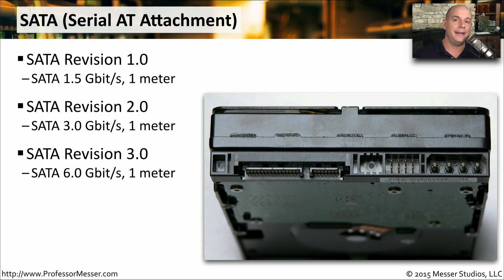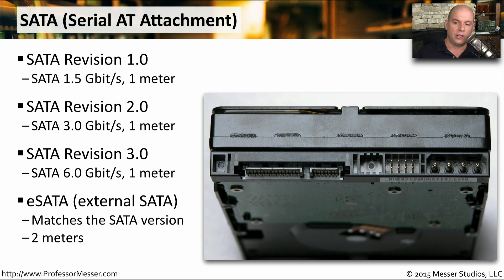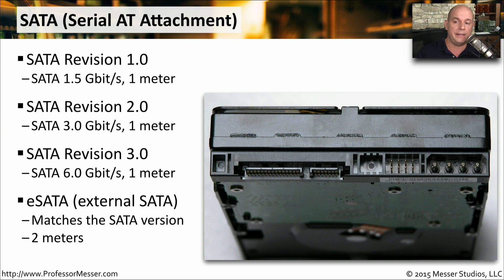You might also see an external SATA connection called eSATA. The eSATA connectivity matches the SATA version used in the device — so if the device runs SATA Revision 2.0, eSATA will run at the same speeds. eSATA supports a maximum cable length of about two meters, making it useful for connecting to external devices.